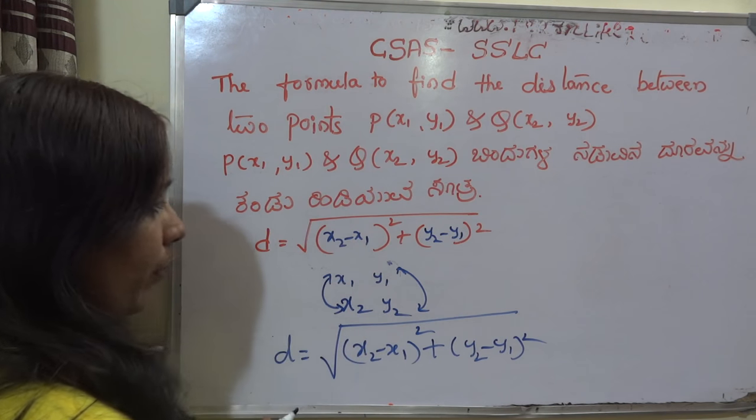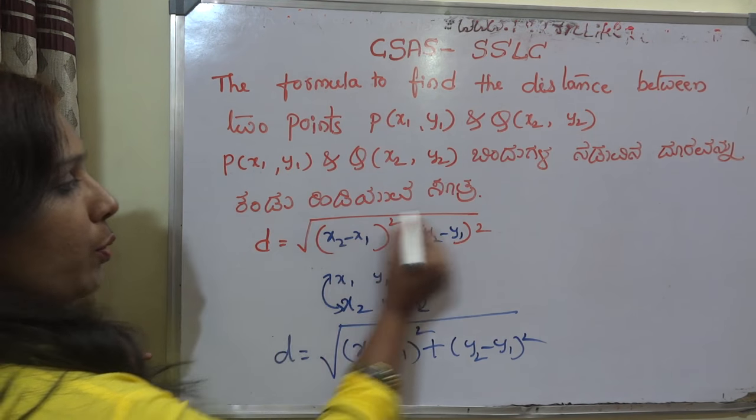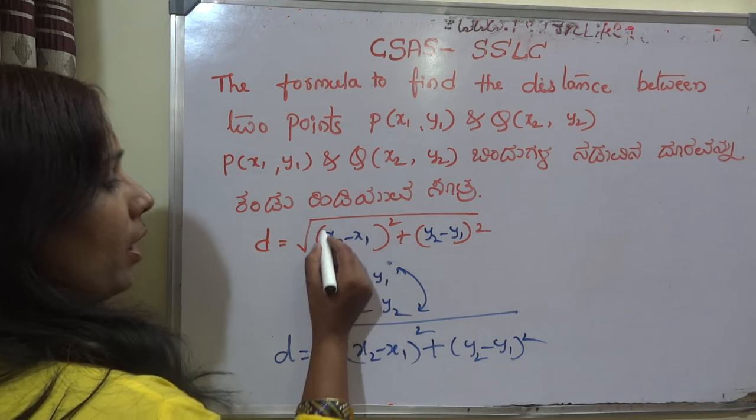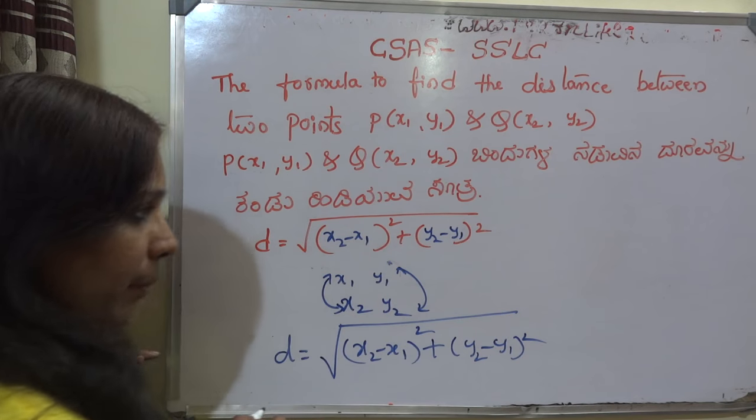To find the distance between two points, d is equal to the square root of — put two brackets, square each, and add between them.